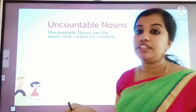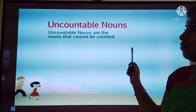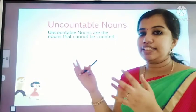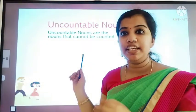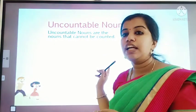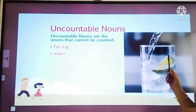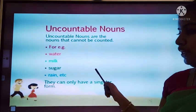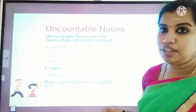Now, what is an uncountable noun? Uncountable nouns are nouns that cannot be counted. Look at the examples: water — we cannot count water. Milk, sugar, rain, and so on — these are some examples of uncountable nouns.